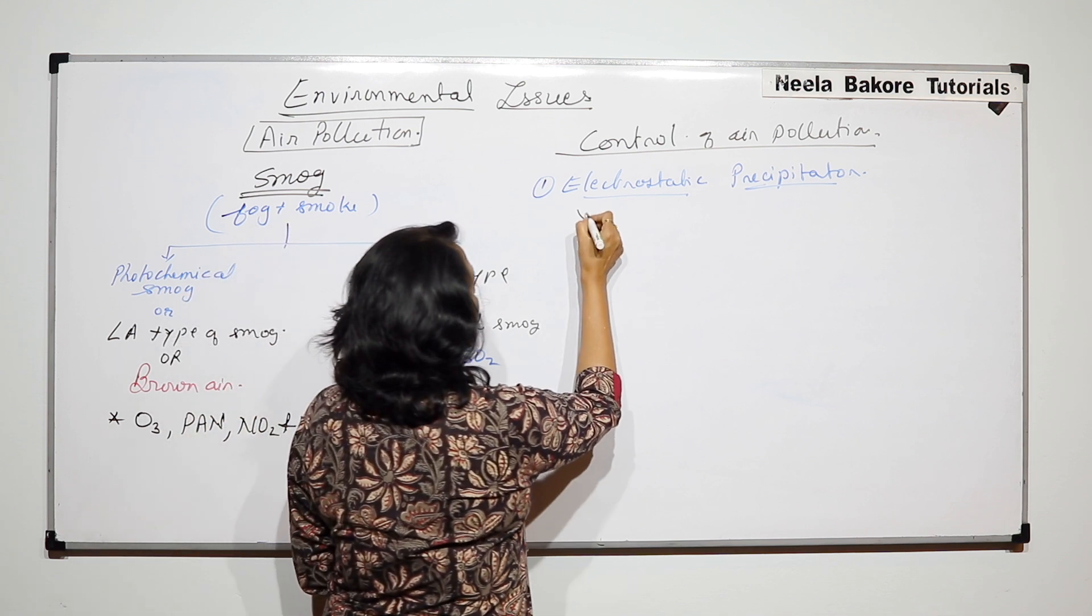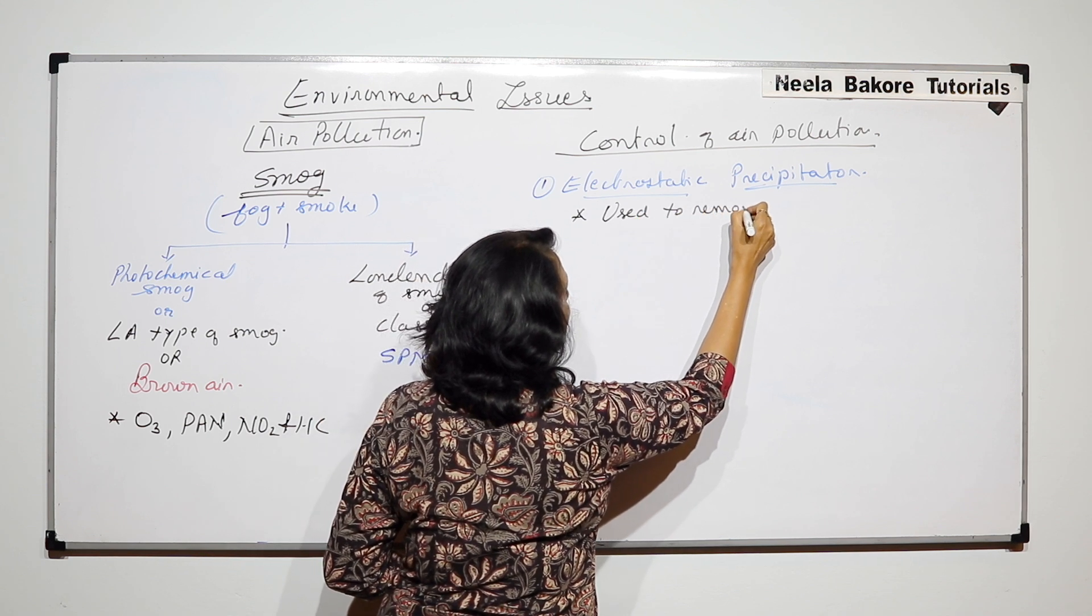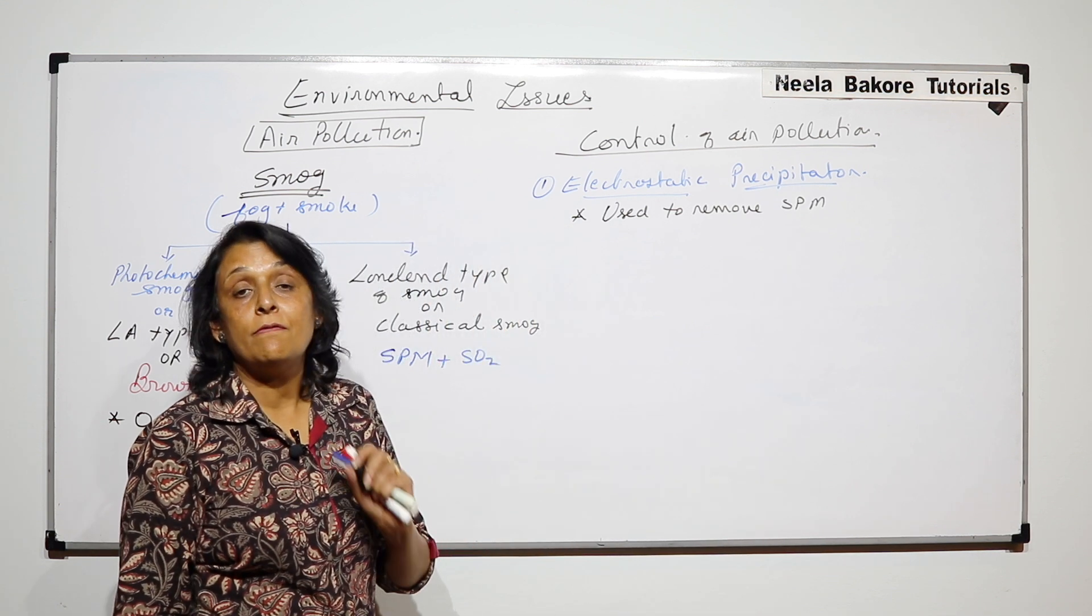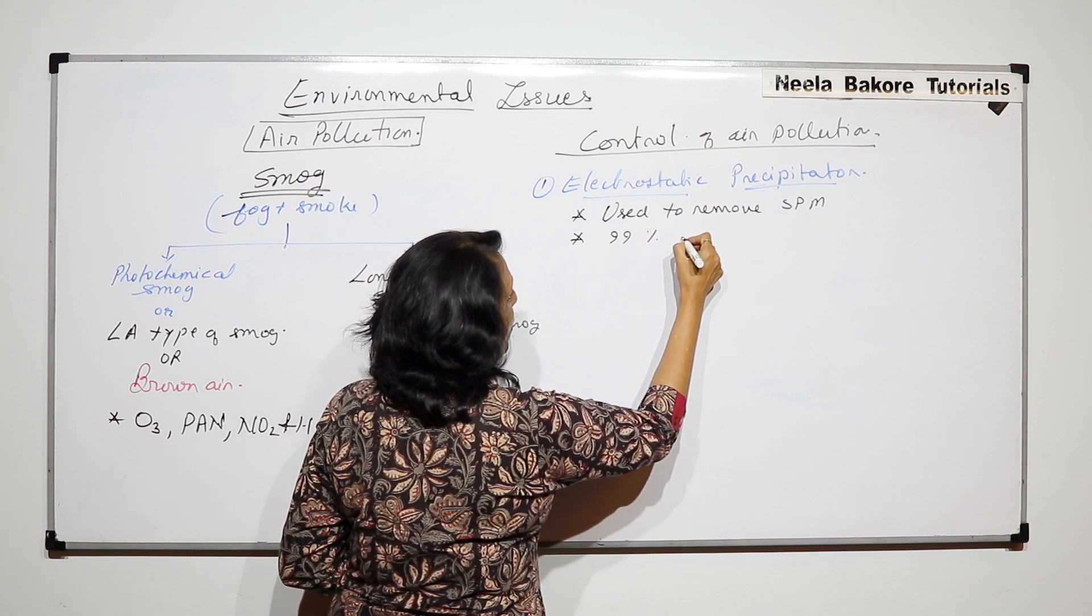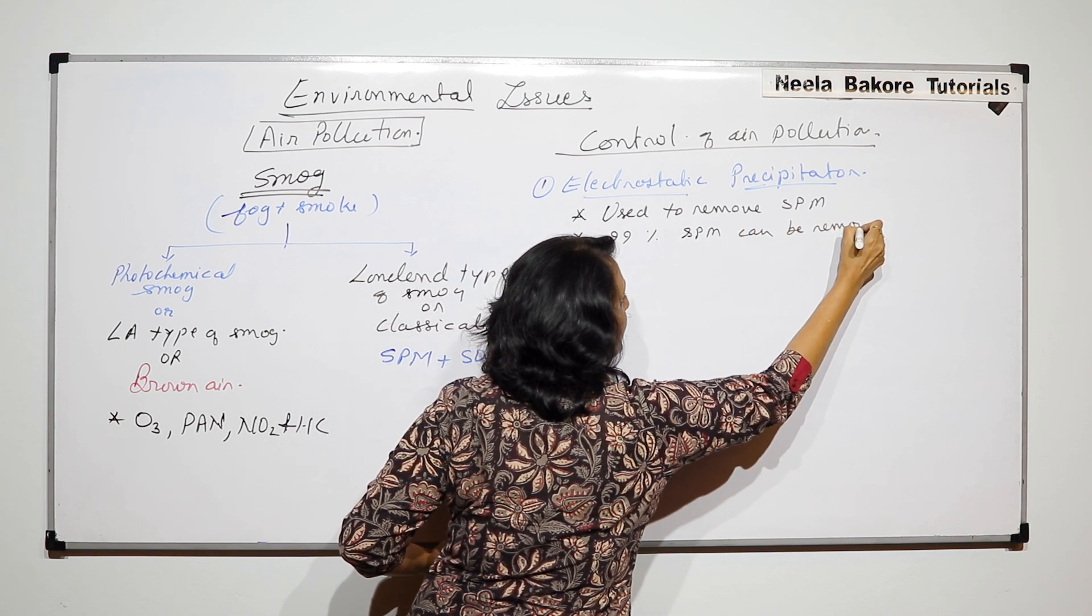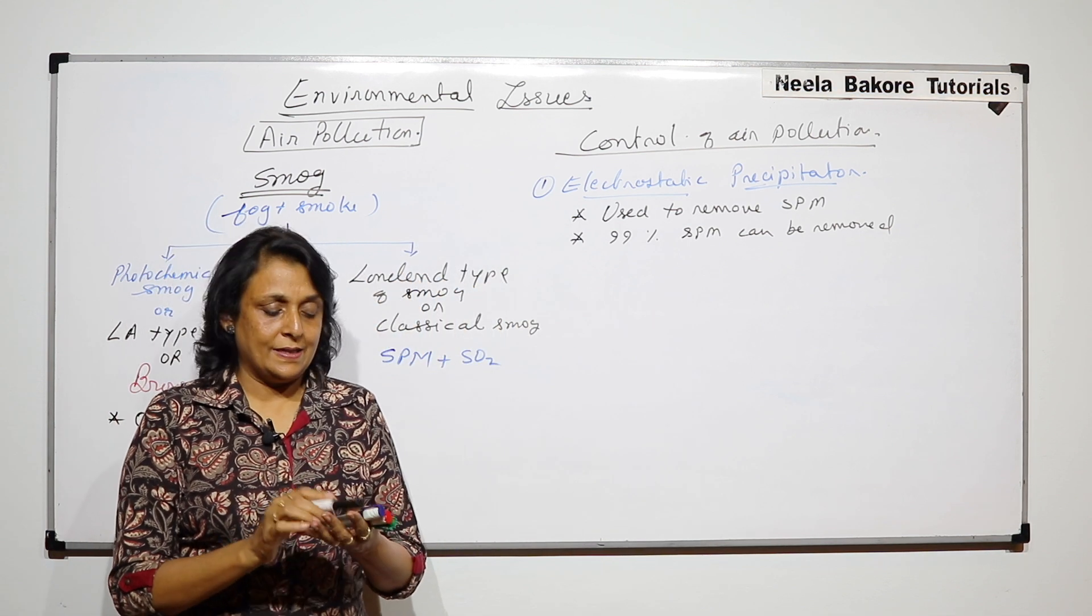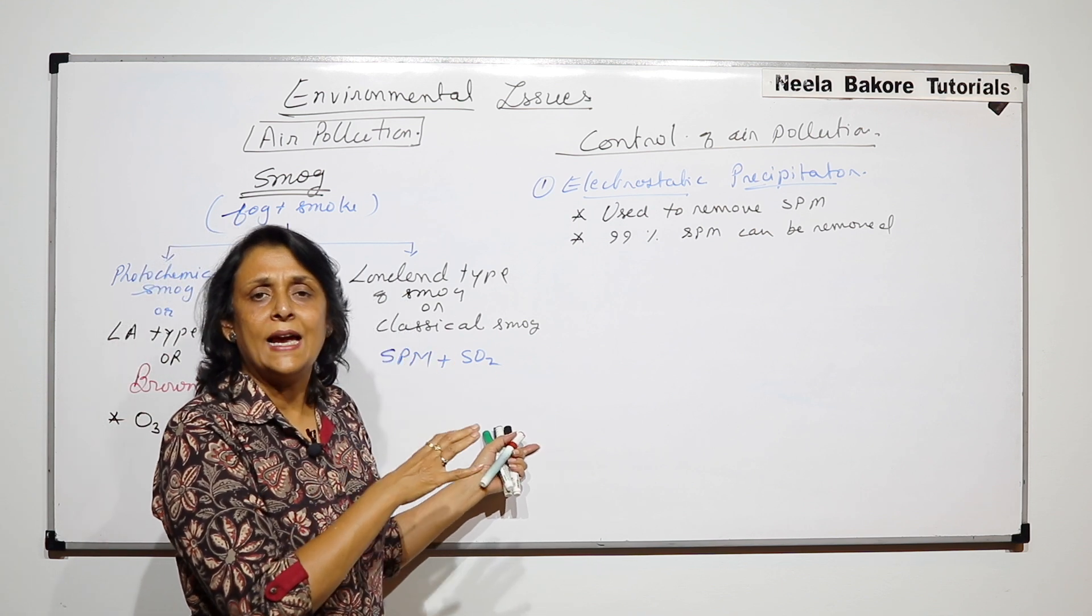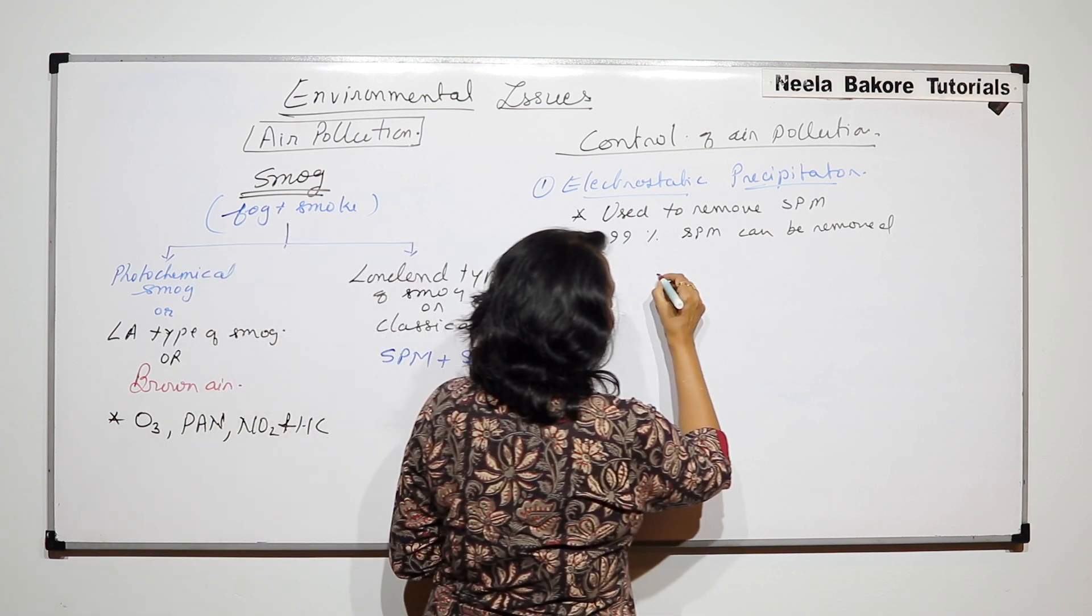Electrostatic precipitators are of various sizes but they work on the same common principle. And they are used to remove suspended particulate matter and they are also very effective. They can remove about 99% of suspended particulate matter. That means it is very effective. Now let us understand the basic principle and this is just a simple schematic diagram to understand how exactly it works.